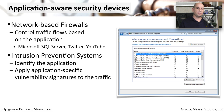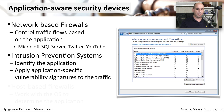Intrusion prevention systems have also taken hold of this application layer view of the network because they can create much more detailed and accurate signatures. IPSs are trying to stop someone from the outside trying to take advantage of a vulnerability inside of a server or an application. So it's useful for those devices to also be aware of what applications are being used to provide that level of access onto your network.